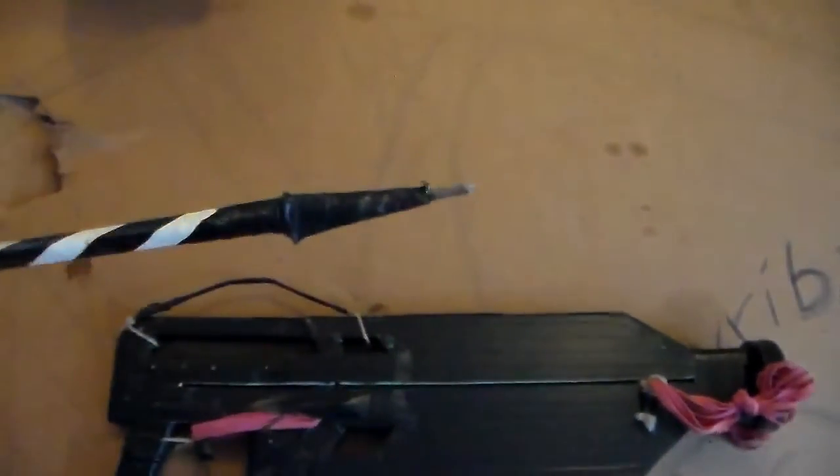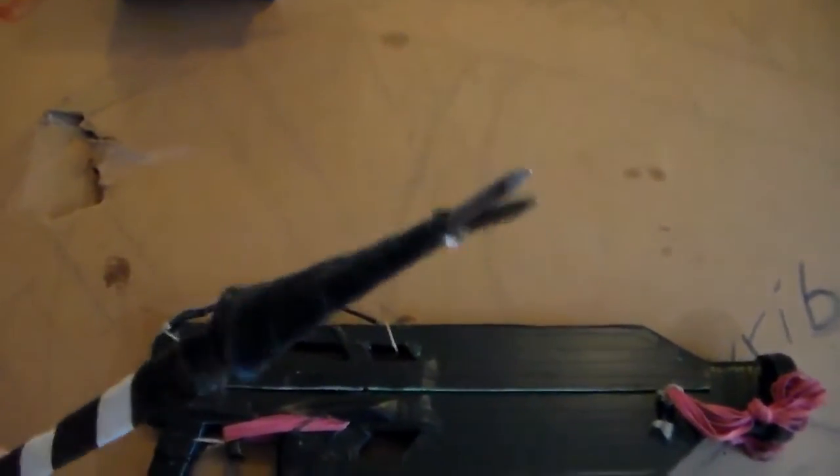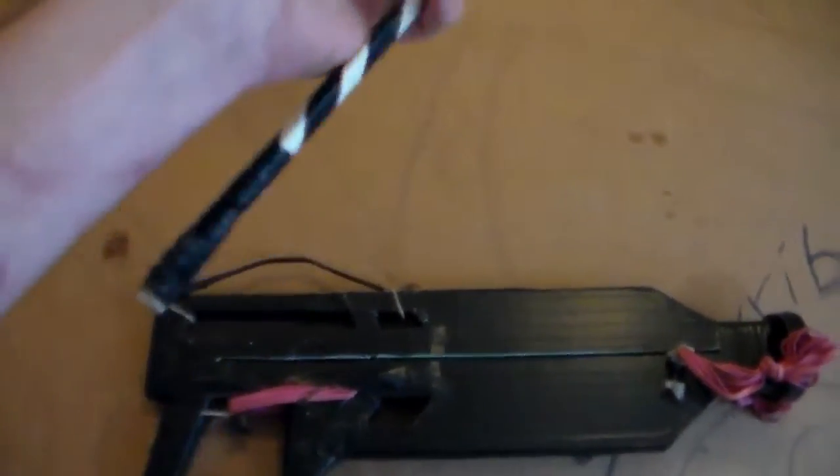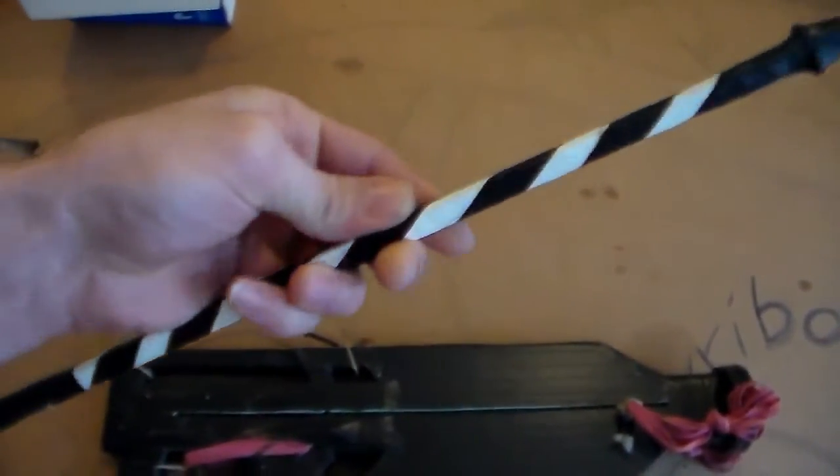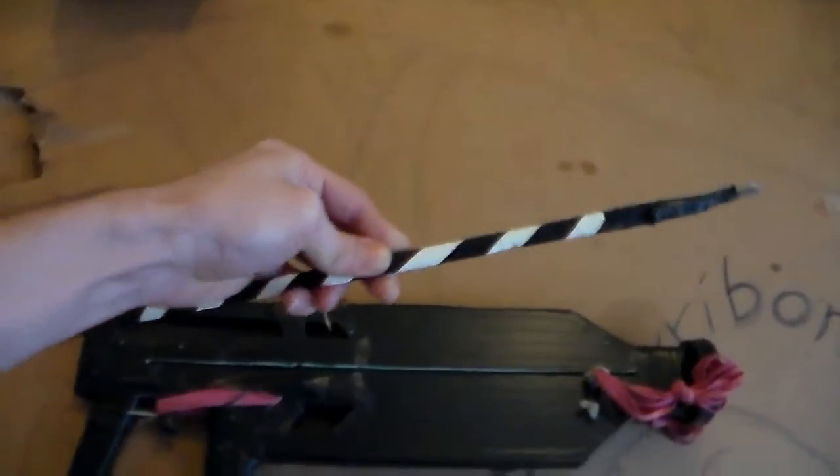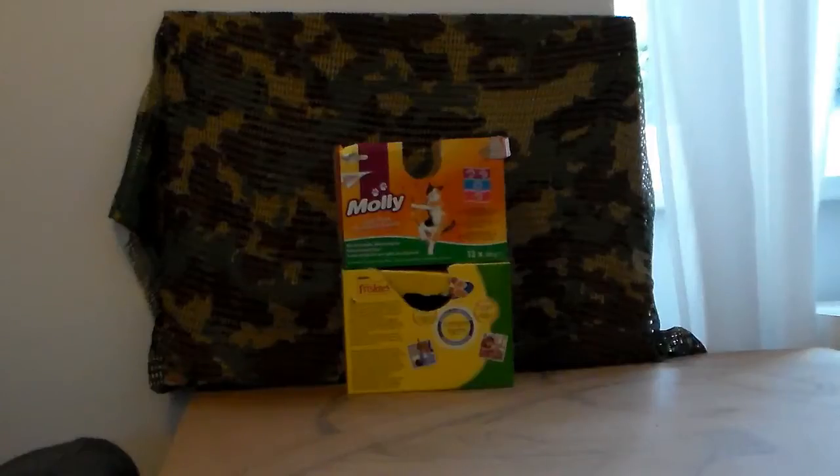Now it's time to check out the performance with the arrow. The tips are simply two nails and the whole thing is made out of thin wood. I'm now shooting from about 5 meters.